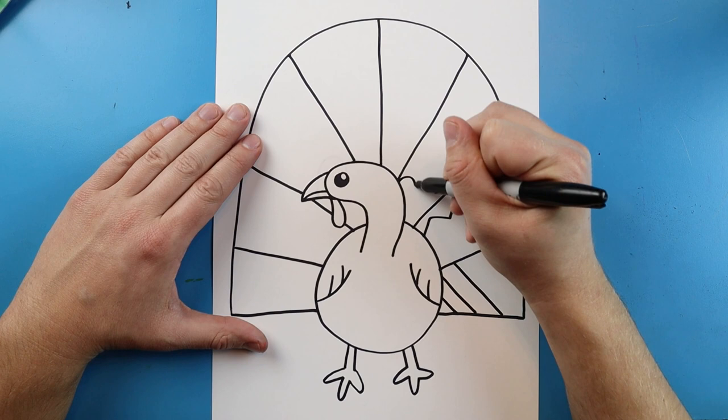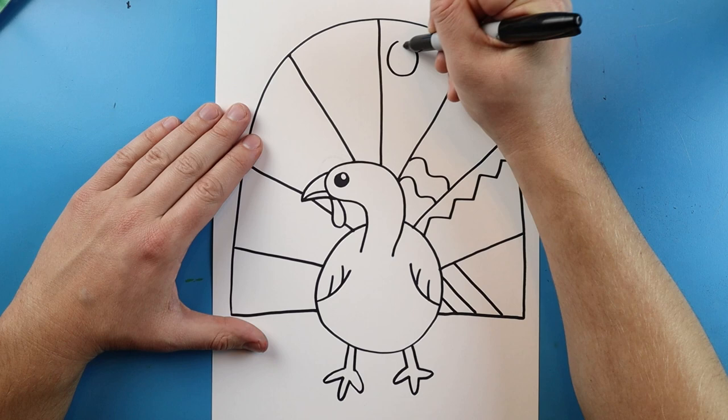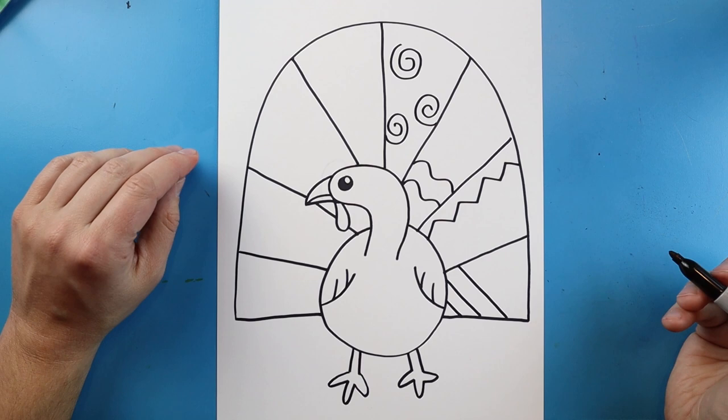You could do zigzag lines in here. Wavy lines. You can make spiral lines all around here.